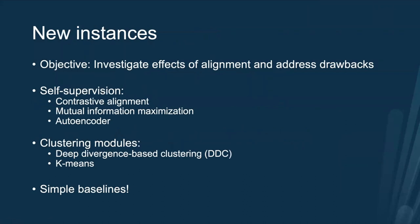The objective of the new instances of DeepMVC is to investigate the effects of alignment and to address the drawbacks mentioned previously. With the new instances, we vary several components, mainly the self-supervision part and the clustering module. For self-supervision, we try contrastive alignment, mutual information maximization, and an autoencoder-based model. The clustering modules vary between a deep clustering module titled Deep Divergent Space Clustering and simple k-means. We also include two simple baseline models to assess baseline performance without any self-supervision.